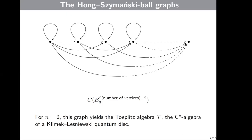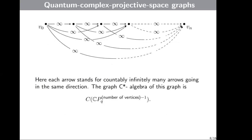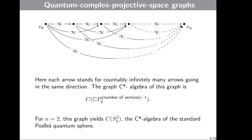The last example is the graph of quantum complex projective space, where each arrow stands for countably infinitely many arrows going in the same direction. The C*-algebra of these graphs is the set of all continuous functions of projective space CP_q^{n-1}, where n stands for the number of vertices. A special case is when N equals 1, and then this graph yields continuous functions on S_q^2, the C*-algebra of the standard Podleś quantum sphere.